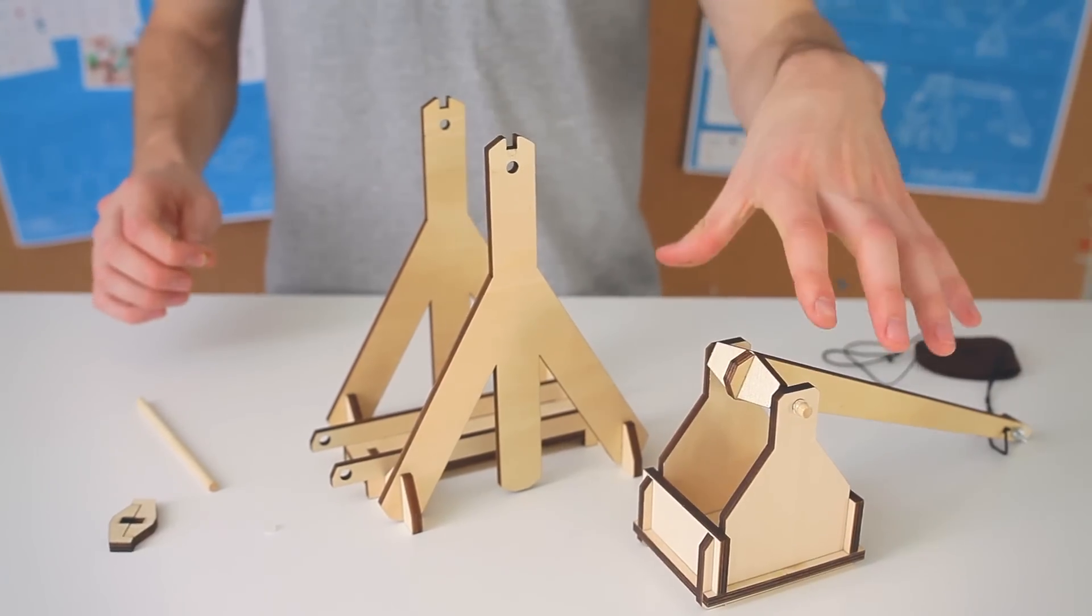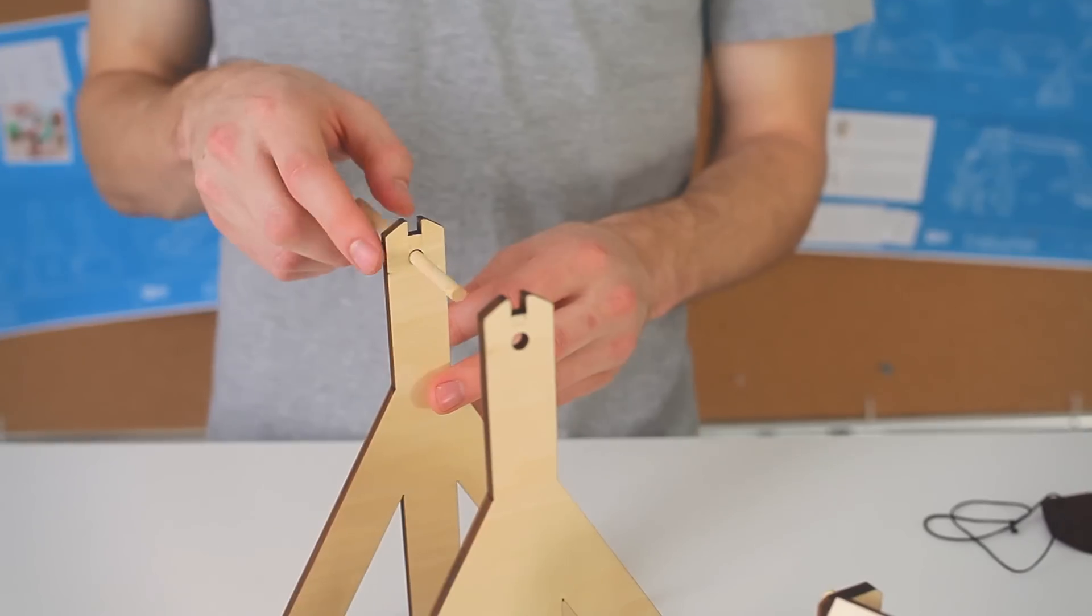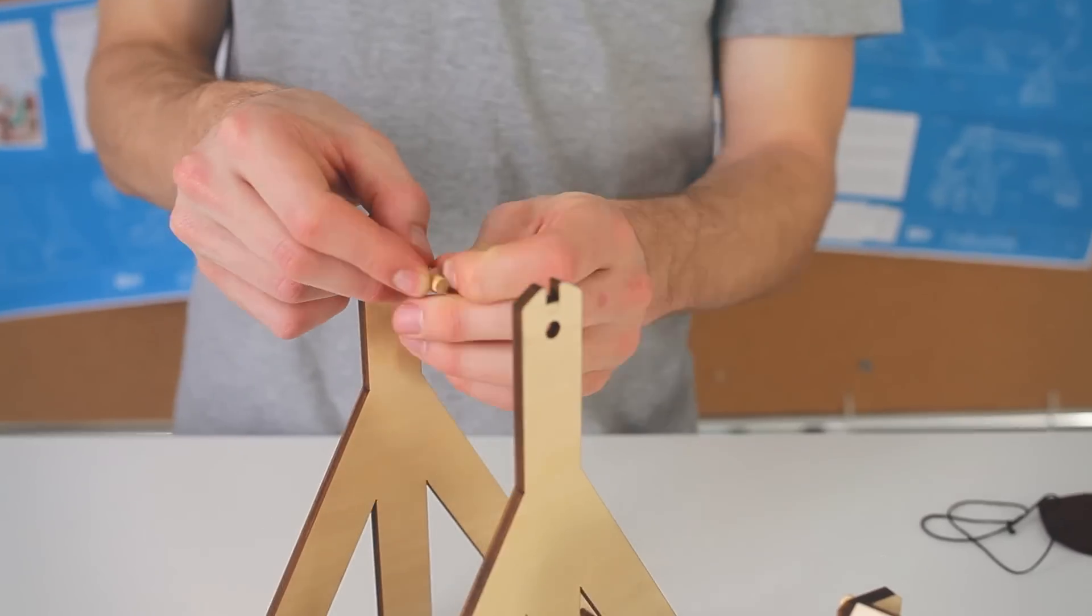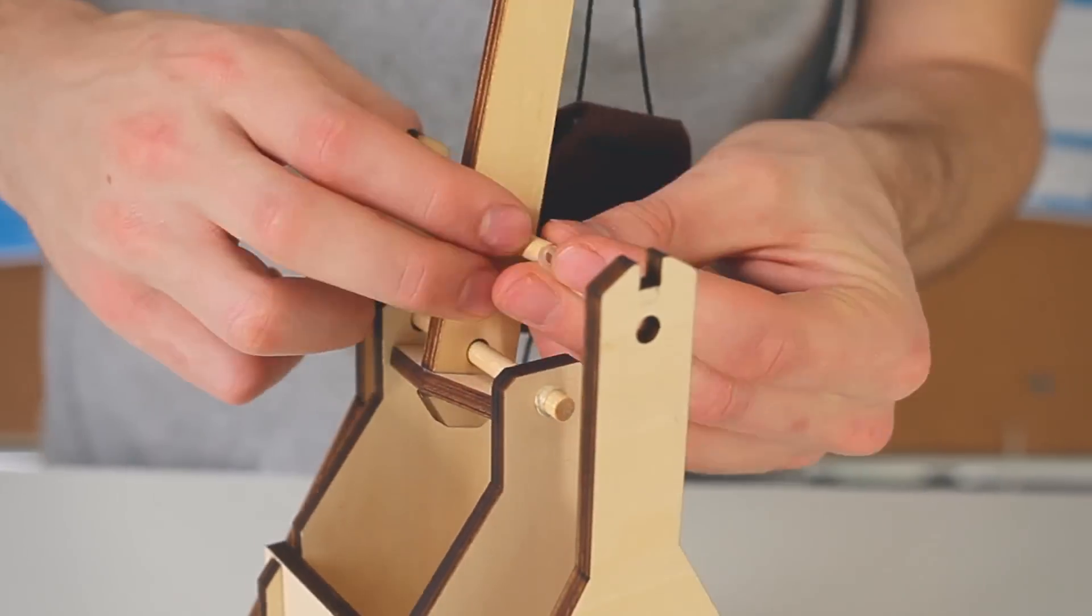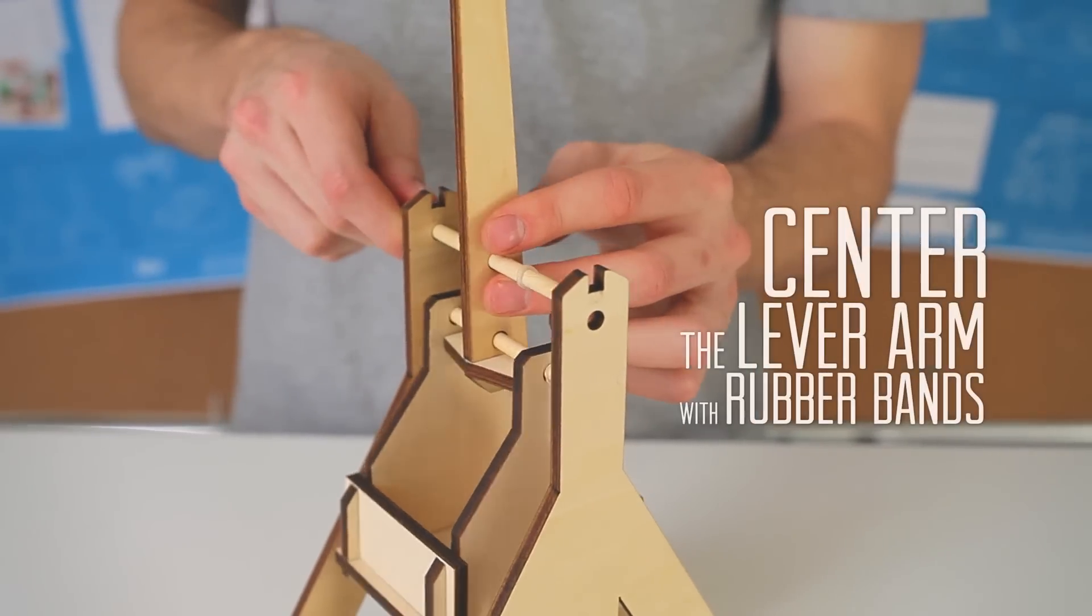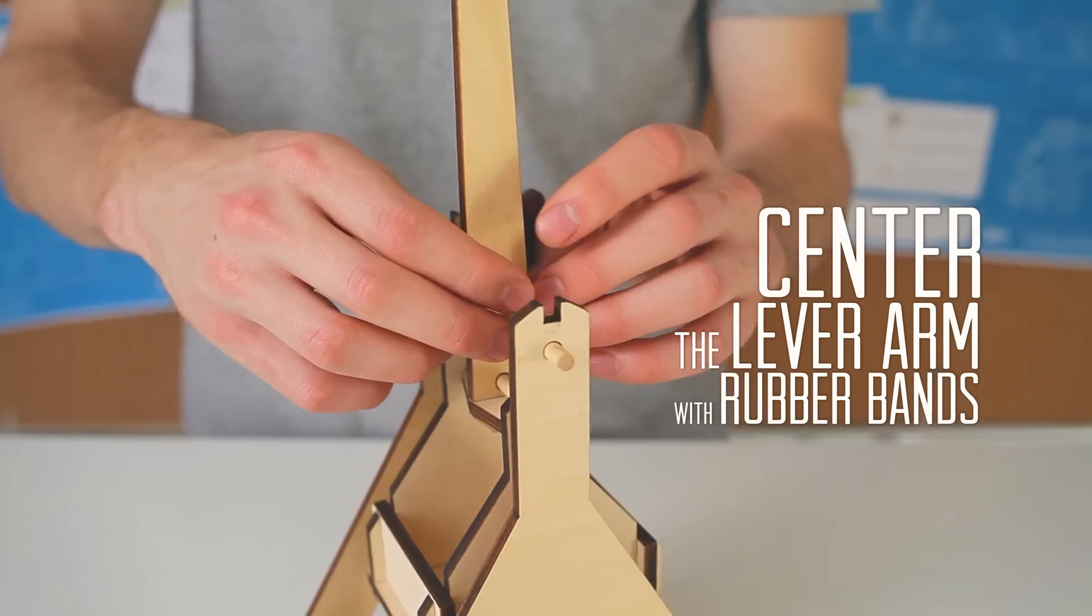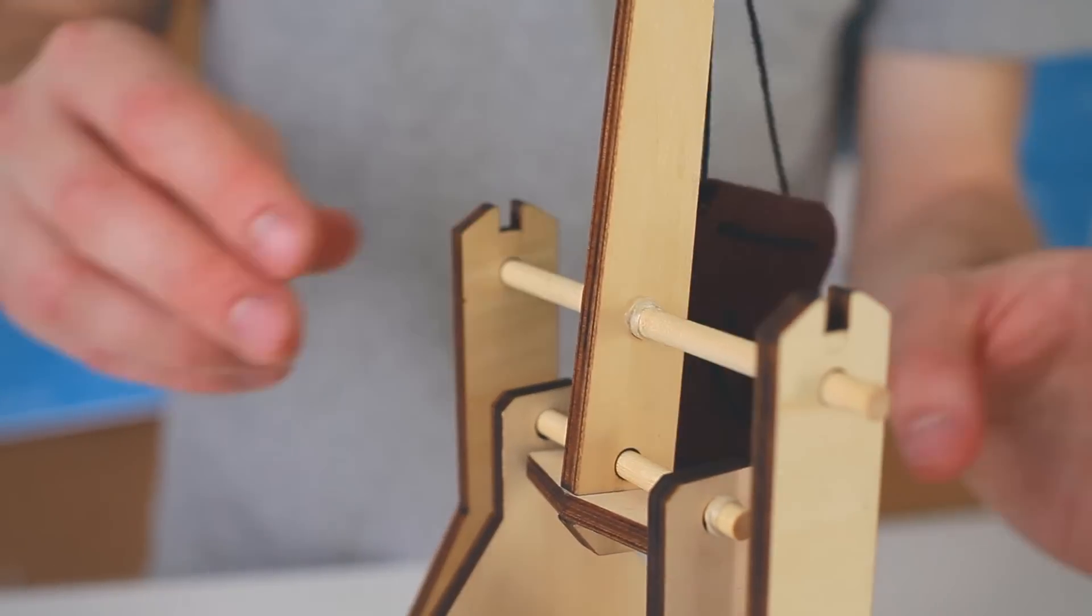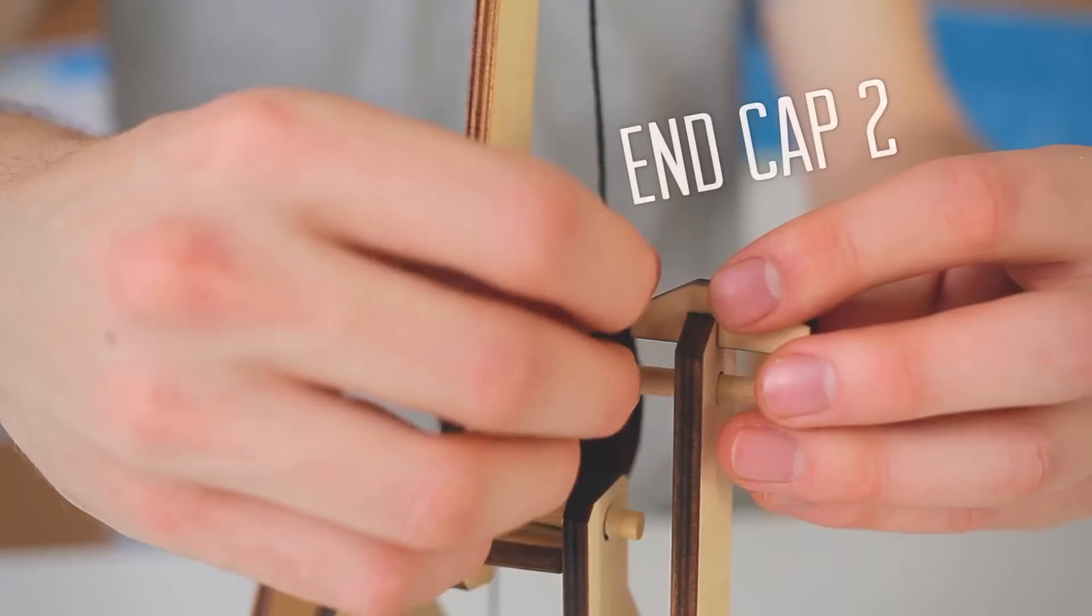Now let's add our whole counterweight assembly to our base. Take your long dowel, slide it through the far side and roll on a rubber band. Then slide the rod through the second hole and add a second rubber band to the other side of the dowel. These rubber bands are going to help keep your counterweight assembly centered. Keep rolling the rubber bands until your counterweight assembly is right in the center. To keep our dowel in place add two end caps.